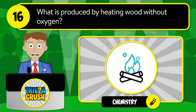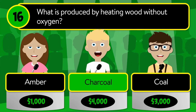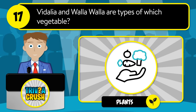Question number sixteen: what is produced by heating wood without oxygen? Is it amber, charcoal, or coal? The correct answer is charcoal.